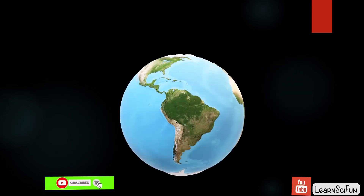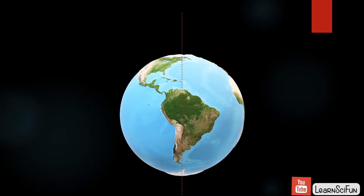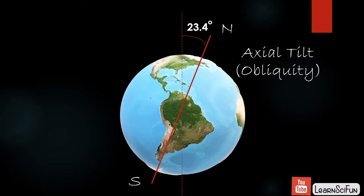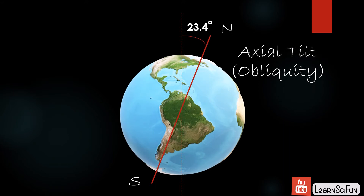The earth constantly rotates on an imaginary axis and orbits around the Sun. The imaginary axis around which the earth rotates is tilted at an angle of about 23.4 degrees. This angle of inclination is also called obliquity.